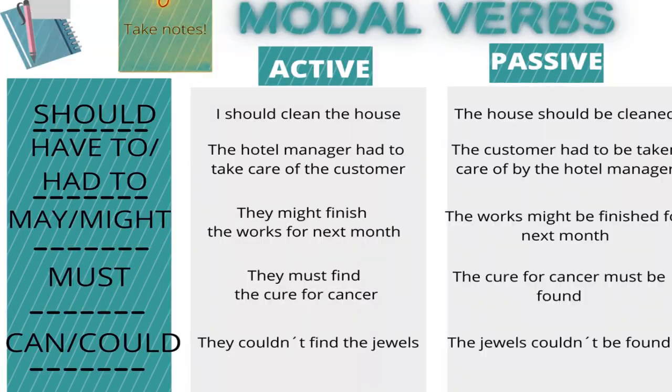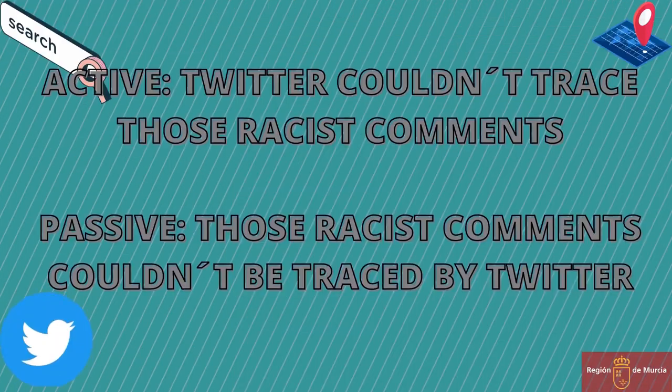In the case of modal verbs, the transformation is the same, and I think it's quite easy. Have a look at the chart and let's share one example: 'Twitter couldn't trace those racist comments' becomes 'Those racist comments couldn't be traced by Twitter.' Please feel free to pause the video and have a look at a few more examples with other tenses.